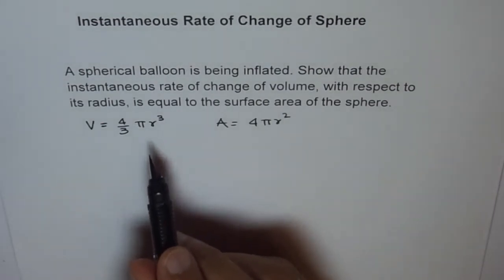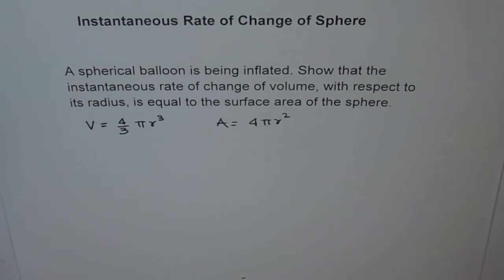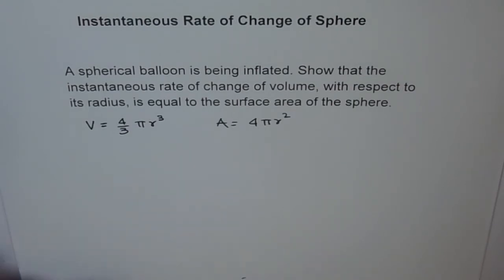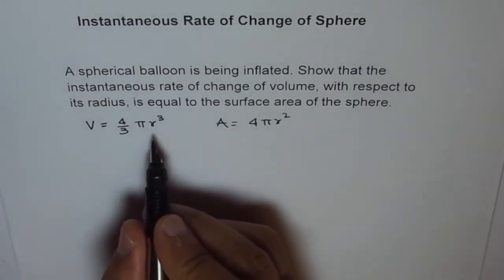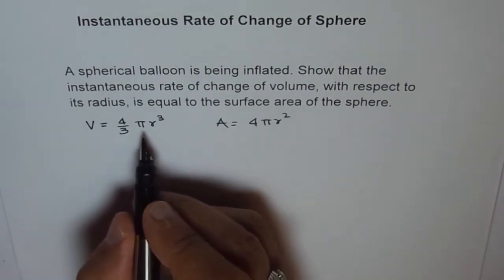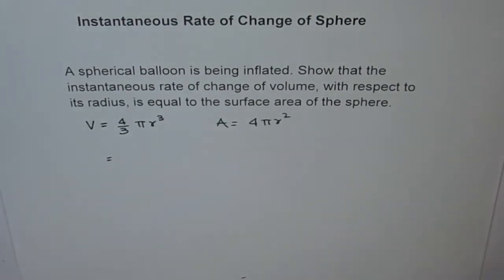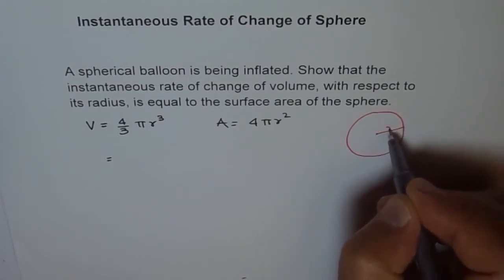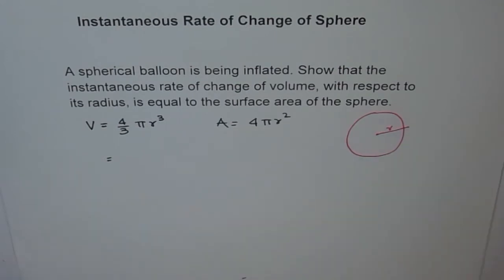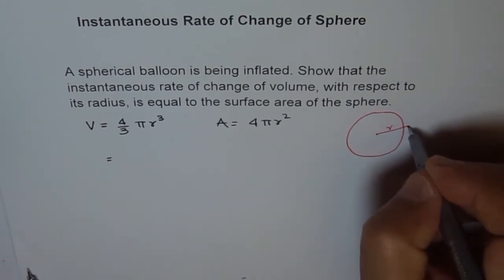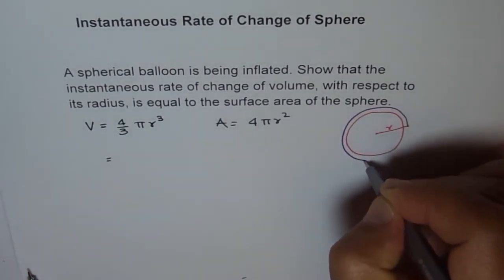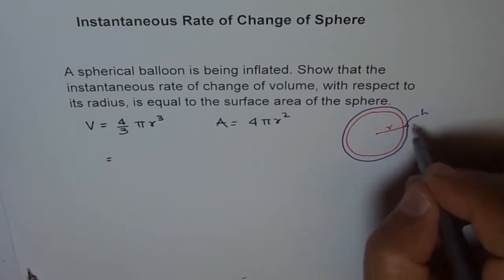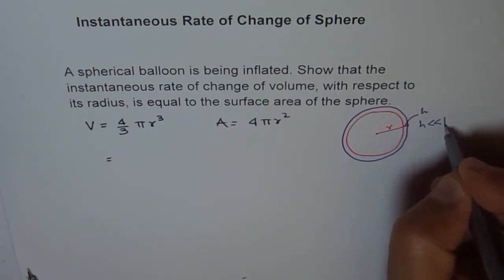What we will assume here is that when we change the radius by a small amount, let's say h, the rate of change of volume will be found. So the rate of change of volume with respect to radius — let's say the radius changes from r, and we change it by a very, very small amount so it becomes r plus h, where h is approaching 0, very close to 0. So h squared will be negligible.